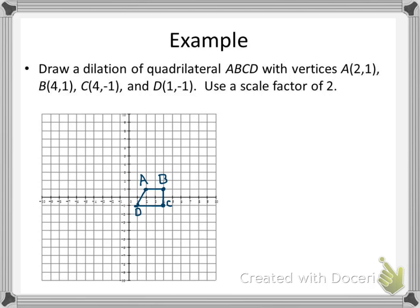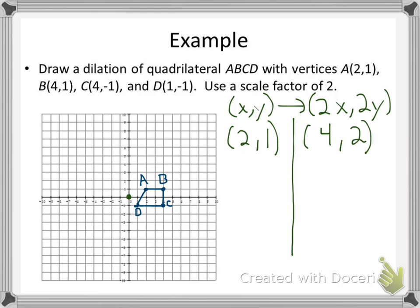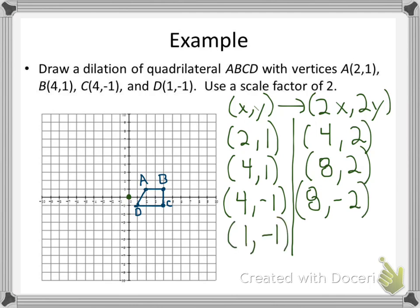I'm based off the center at the origin, and I have a scale factor of 2. Let's look at the notation first. I'm going from (x, y) to (2x, 2y), because that's getting that kx, ky. So, the point (2, 1) goes to (4, 2). B, which is (4, 1), goes to (8, 2). C, which is (4, -1), goes to (8, -2). And D, which is (1, -1), goes to (2, -2).